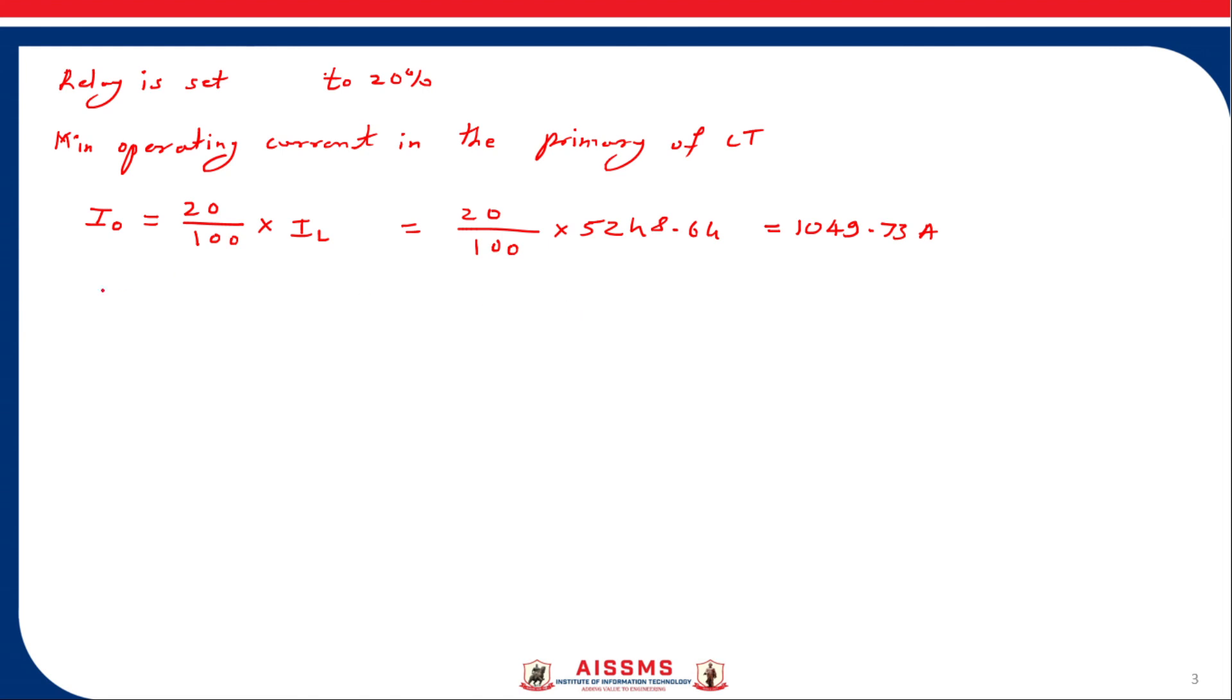Now percentage winding unprotected equals 100 minus value of percent winding protected 85. 100 minus 85 is 15, so the percentage winding unprotected is 15%. Once we get this value, let us use basic formula of percent winding unprotected.